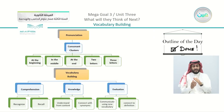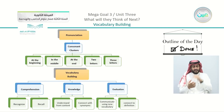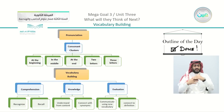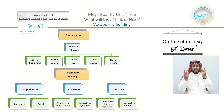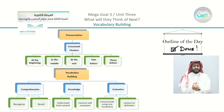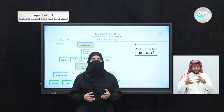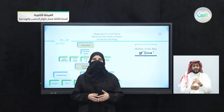Our outline for the day: pronunciation — we talked about consonant clusters, which may come at the beginning, middle, or end of a word, and may be two or three letters. We had vocabulary building with comprehension to recognize words and recall meanings, then knowledge to understand from context and connect to synonyms. The last part was evaluation — to communicate using new vocabulary and connect to definitions. Our vocabulary building lesson is done. We are going to prepare for our next lesson, which is the reading. So be ready!